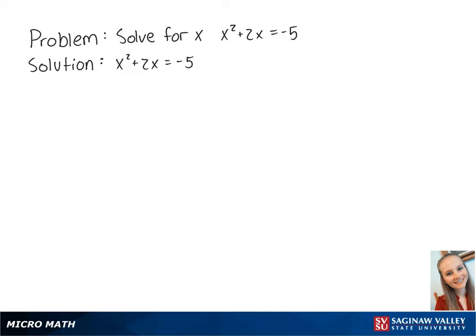For this problem, we want to solve for x in the equation x squared plus 2x equals negative 5. First, we want the right side of the equation to be equal to 0, so we're going to add 5 to both sides to get x squared plus 2x plus 5 equals 0.